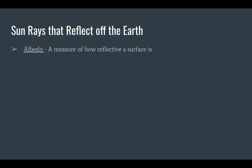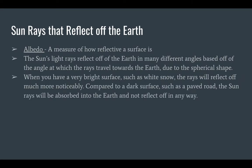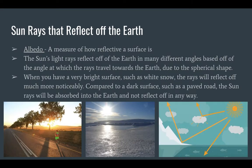This is known as albedo, or a measure of how reflective a surface is. The sun's light rays reflect off the earth in many different angles based off of the angle at which the rays travel towards the earth due to the spherical shape. When you have a very bright surface, such as white snow, the rays will reflect off much more visibly. Compared to a dark surface, such as the paved road, the sun rays will be absorbed into the earth and not reflect off in any way.